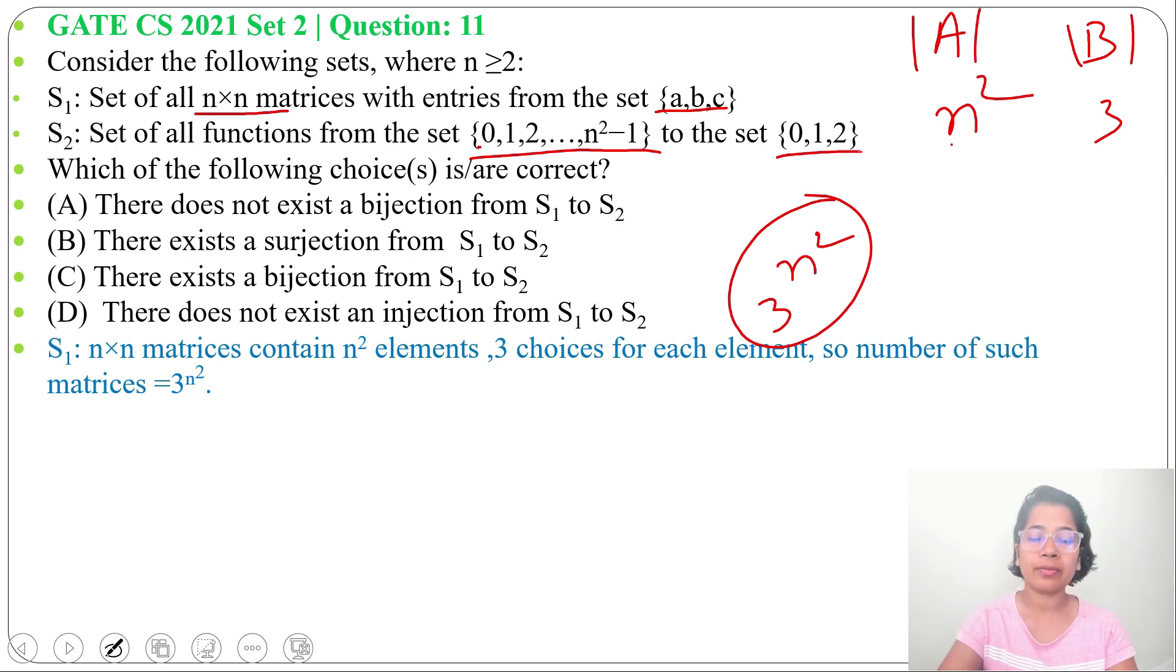Now it is asking for the set of functions from this set to this. First set A contains n² elements and set B contains 3 elements. Number of functions possible equals |B| to the power |A|, which is 3 to the power n². So the number of such functions possible equals 3^(n²).